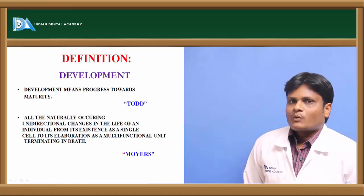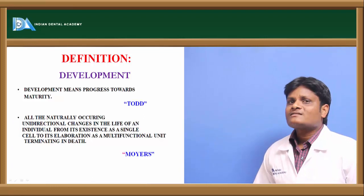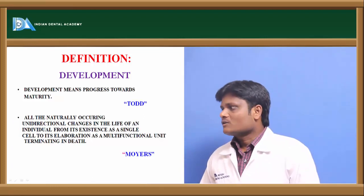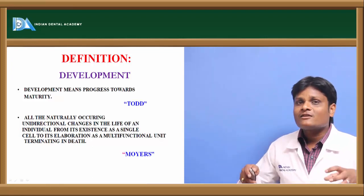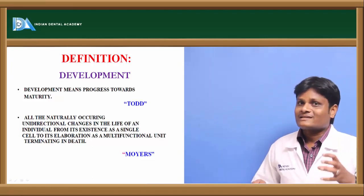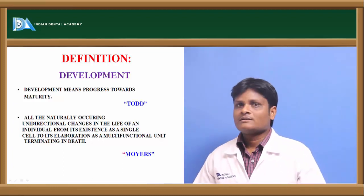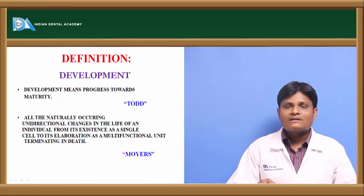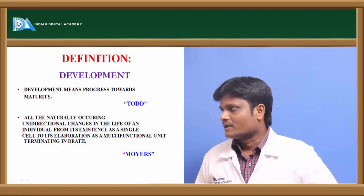Development is progress towards maturity, or we can call it all the naturally occurring unidirectional phenomena from a tissue's existence as a single cell to a more complex organ, right from the beginning of human life till the death of the individual.